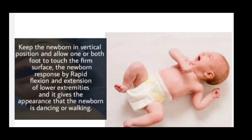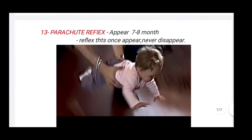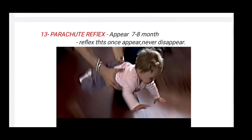The last reflex is the parachute reflex, which is mainly present in older infants. It appears at seven to eight months, and once it appears it never disappears. This is the last of our 13 reflexes. I hope you like this video — if so, please share it with your friends and subscribe to my channel. This is part two of neonatology; the link to part one is in the description box. Thank you.